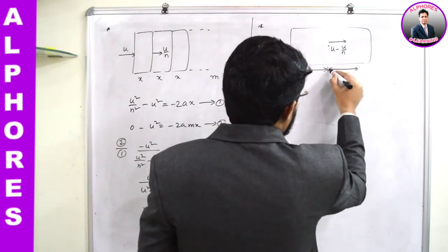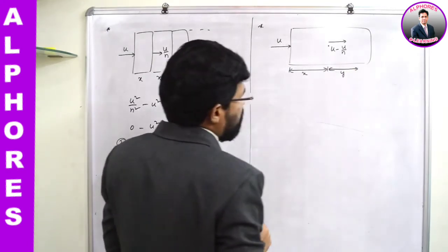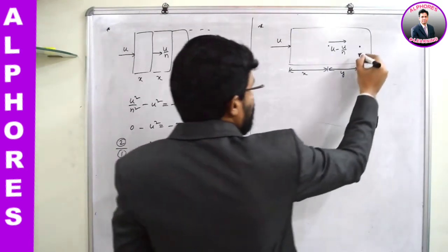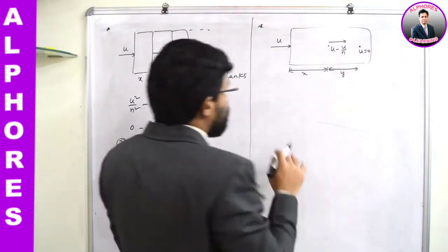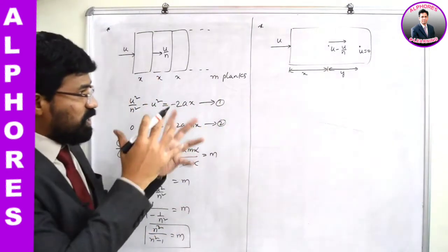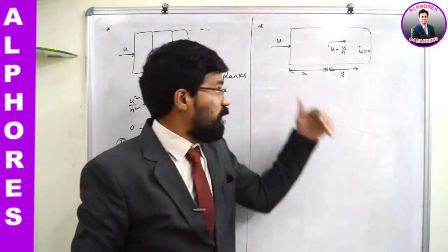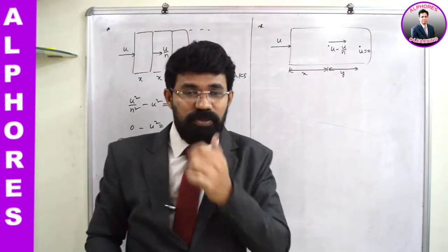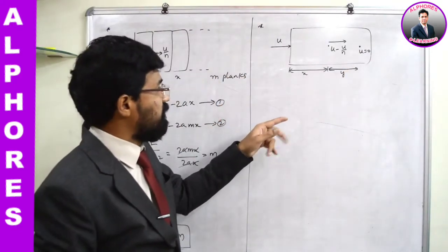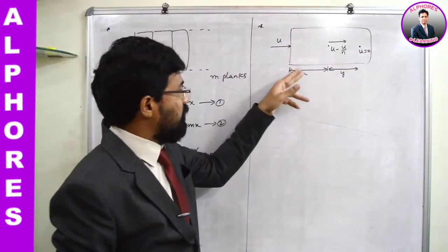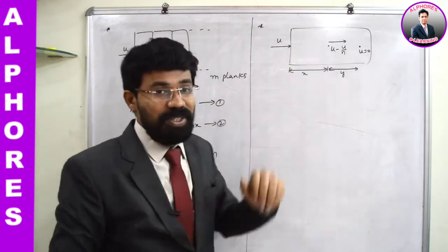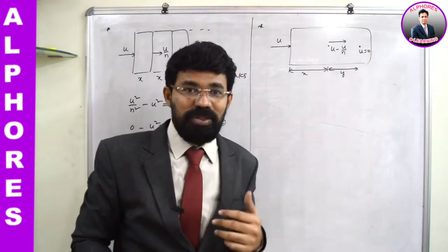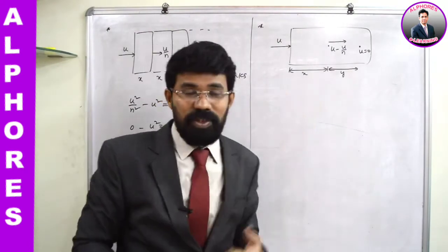In this situation, the bullet is not passing through the entire block — somewhere inside it will come to rest. After traveling distance x its velocity is u - u/n. Further, how much distance y must it travel to come to rest? Our interest is this distance y, and the known quantities are x and n.